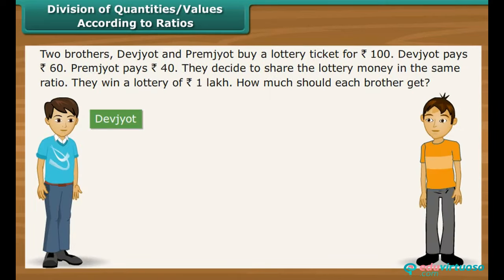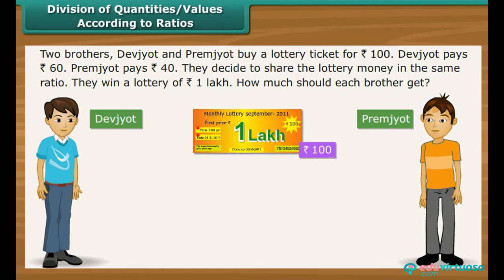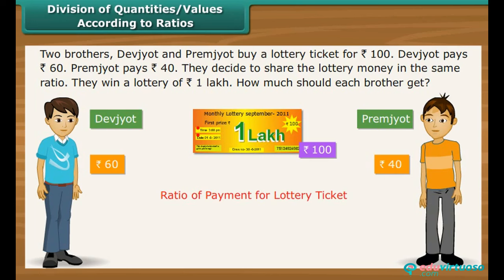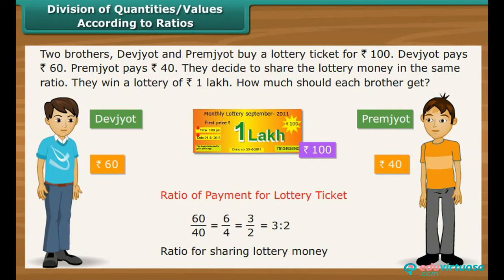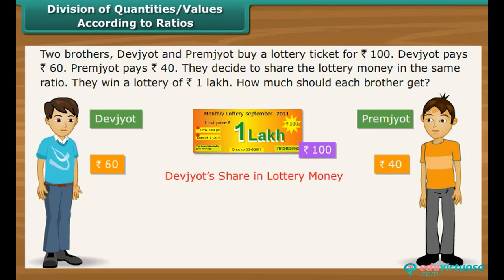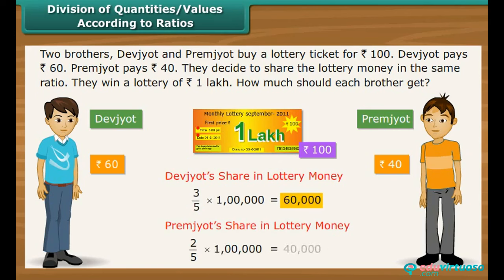Two brothers, Dev Jodh and Prem Jodh, buy a lottery ticket for Rs. 100. Dev Jodh pays Rs. 60 and Prem Jodh pays Rs. 40. They decide to share the lottery winnings in the same ratio. They win a lottery of Rs. 1 lakh. The ratio of their payments is 3 is to 2, so out of every 5 rupees won, 3 go to Dev Jodh and 2 to Prem Jodh. Dev Jodh's share is Rs. 60,000 and Prem Jodh's share is Rs. 40,000.